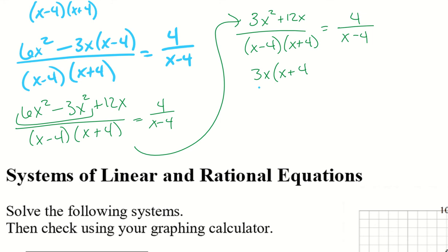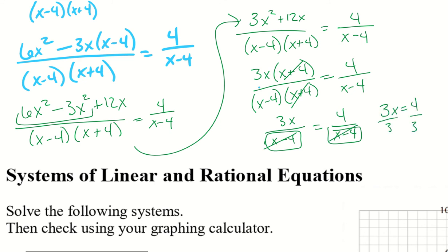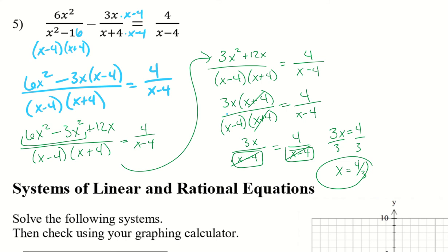Sometimes factoring doesn't help, but a lot of times it does — it doesn't hurt to try. In this case it does help: we have x plus 4 on top and x plus 4 in the denominator, so those cancel. I also have x minus 4 on both denominators, so those cancel too. I'm left with 3x equals 4, so x equals 4 over 3. Restrictions: x cannot equal plus or minus 4, so x equals 4 over 3 is valid.